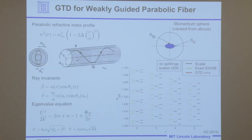You can also do this for parabolic fiber — there are no reflections here, it's all continuous. This is a nice example because a lot can be done analytically. Again we get the same story: the vector effects are captured to a very good approximation just by a Berry phase in this case.